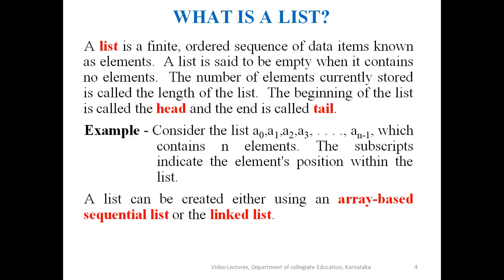From these examples, we understand that a list is a finite ordered sequence of data items, which are known as elements. The list is said to be empty when there are no elements in it. The number of elements stored in the list is called the length of the list. The beginning of the list is called the head and the end is called its tail. Consider a list of n values like a0, a1, a2, a3, up to an-1.